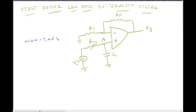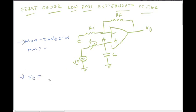This is a non-inverting amplifier — the input passes to the non-inverting terminal. V0 equals 1 plus RF by R1, into voltage VA. This is voltage VA.